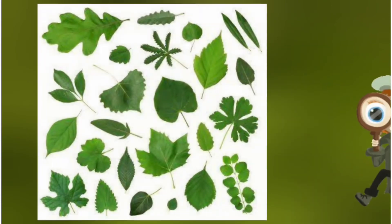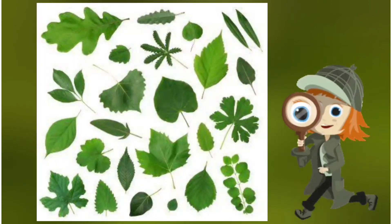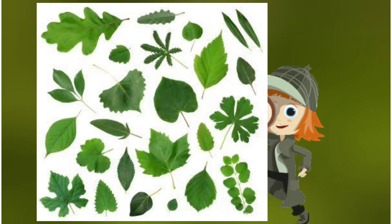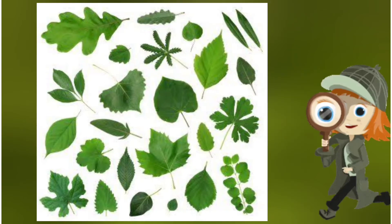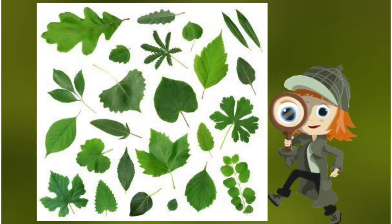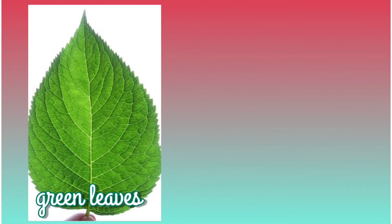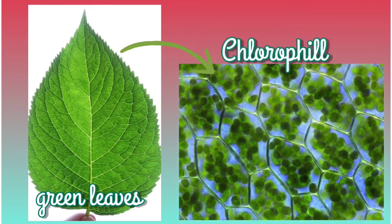Look at these leaves. Can you spot the differences? Green colored leaves have a special substance called chlorophyll in them. This chlorophyll gives them their green color.